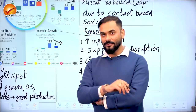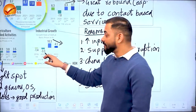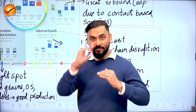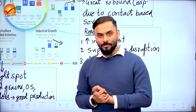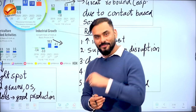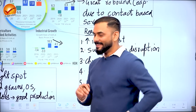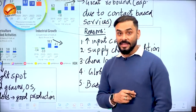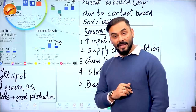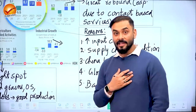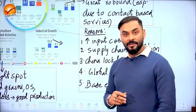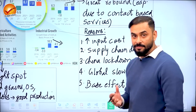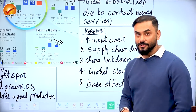Industrial production has come down for multiple reasons: the base effect is gone, input costs have increased due to global inflation, Chinese lockdown disrupted raw material supply including semiconductors, and the Russia-Ukraine war affected commodity prices and supply chains globally. All these factors hurt industries.